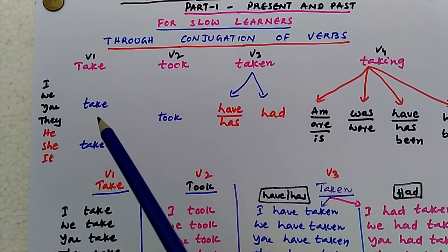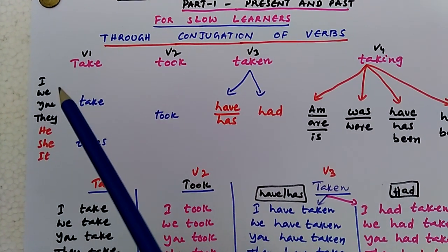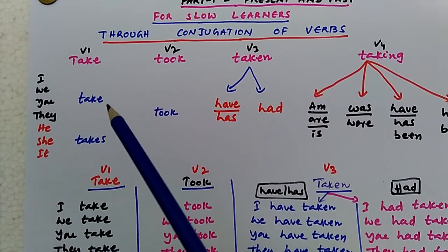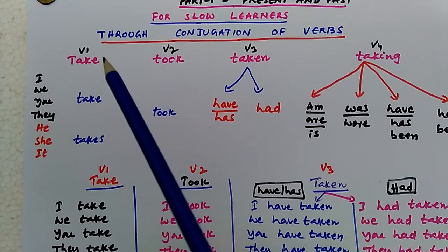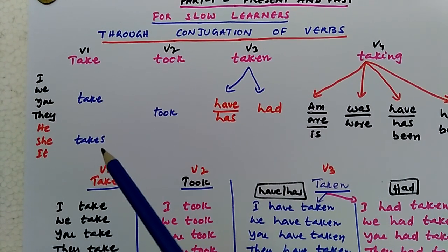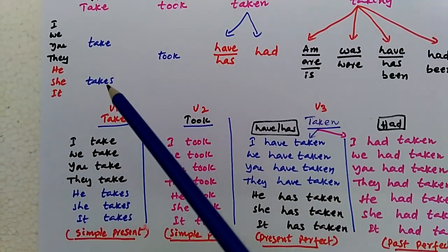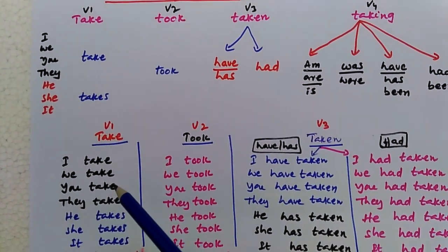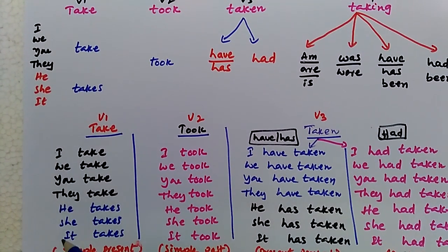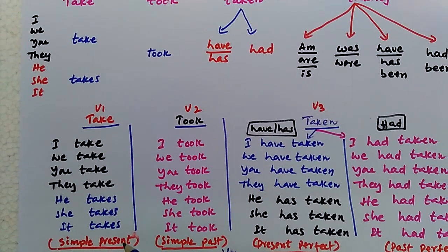With verb one, it is very easy for us to write a table. Just adding I, we, you, they, he, she, it to it — but a little care is to be taken in case of verb one, that with he, she, it we need to write the S form, that means 'takes'. So the table will be: I take, we take, you take, they take, he takes, she takes, it takes. This is called simple present.